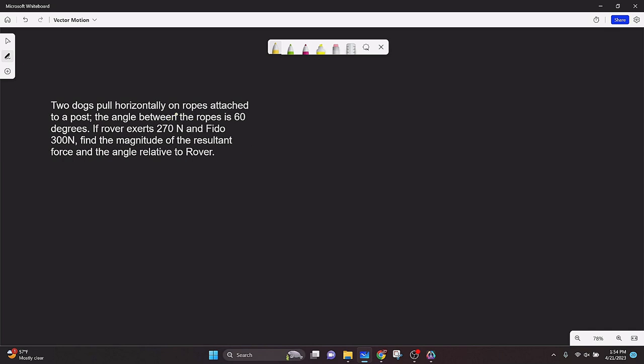So we have two dogs that are pulling horizontally on ropes, and those ropes are attached to a post. Okay, the angle between the ropes is 60 degrees. If Rover, one of the dogs, exerts 270 newtons, and Fido exerts 300 newtons, find the magnitude of the resultant force and the angle relative to Rover.